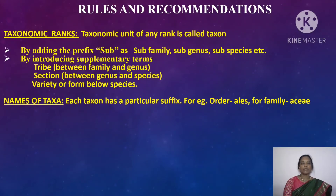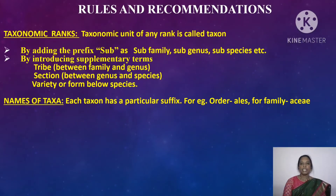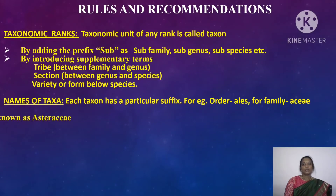The names of taxa should be given with particular suffixes. For example, order ends with '-ales', family with '-aceae', division with '-phyta', and class with '-eae'. Some families were treated as exceptions because of their long usage, and alternate names were given to these families.